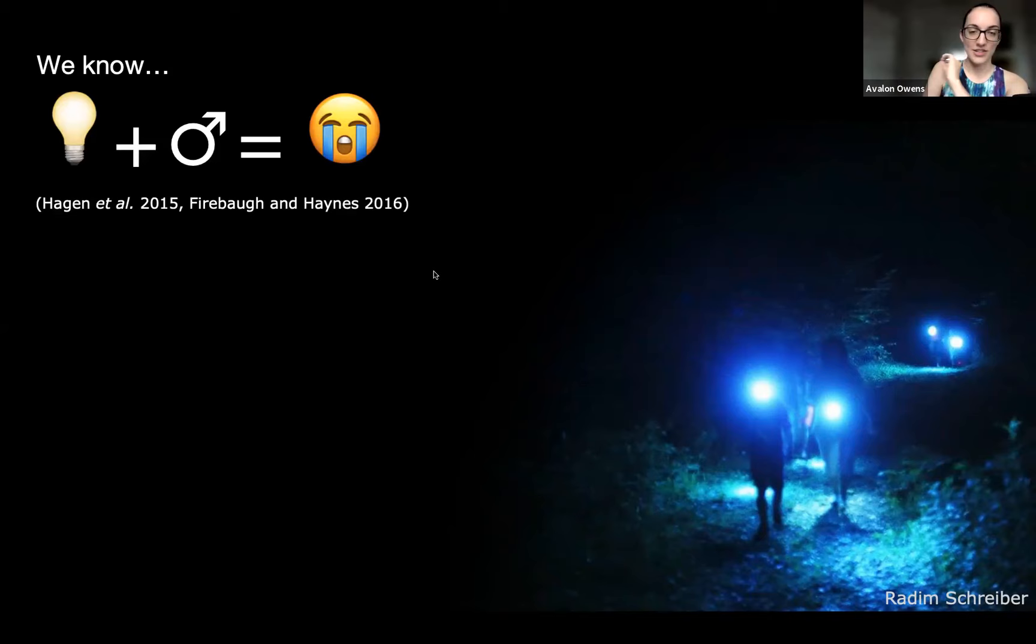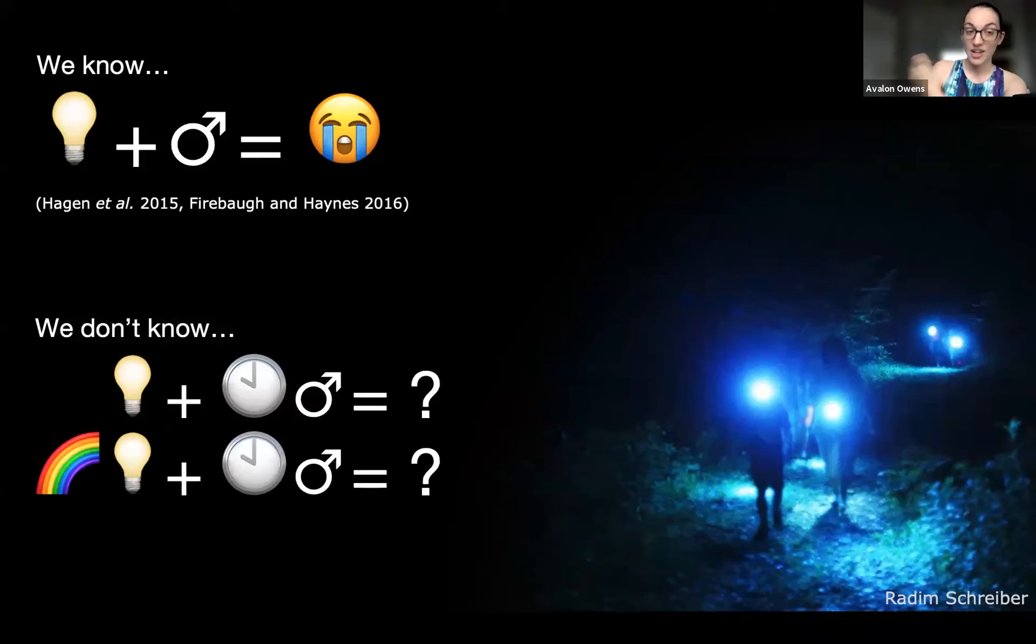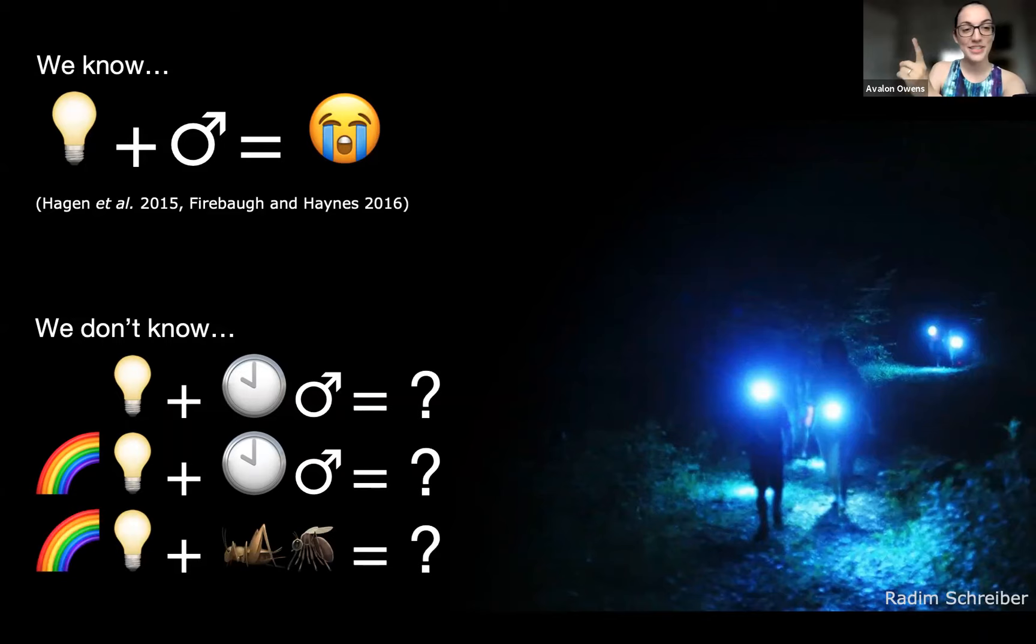We already know, based on a lot of previous research, that white light makes male fireflies flash less, but there are a lot more aspects to this particular situation that we needed to figure out. I wanted to know, how does light affect synchronous fireflies? This is a unique way of being a firefly and are they more or less vulnerable to artificial light? What colors of light are the most disruptive and the least disruptive? Can we find a color that just doesn't bother them that much? How do these colors of light affect other insects in the habitat? Because it's not just a firefly zone. It's an ecosystem and we want to protect the whole thing.